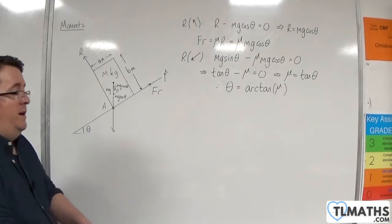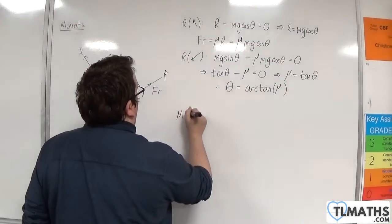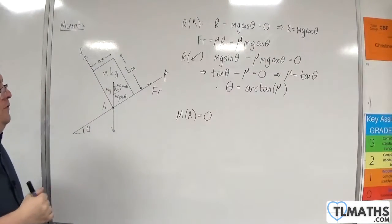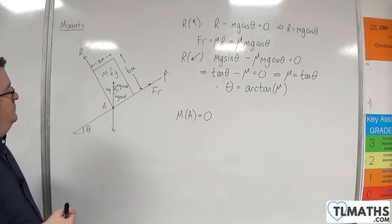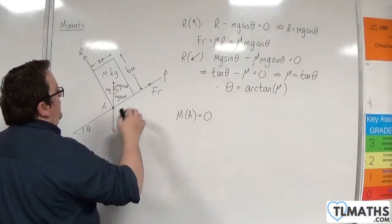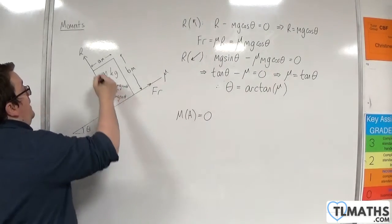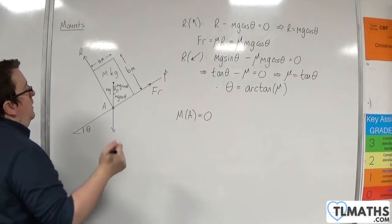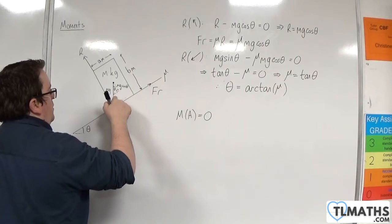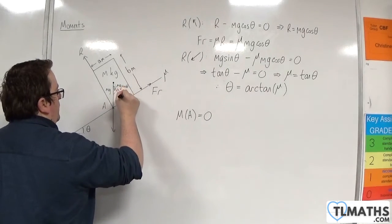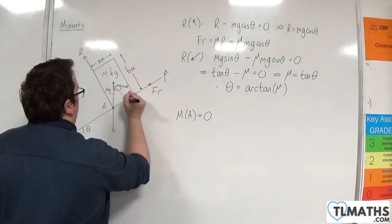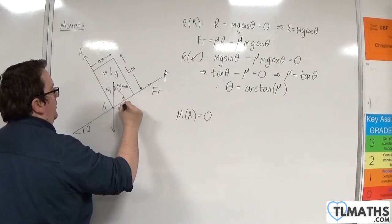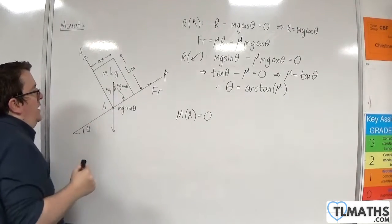So I'm going to take moments about point A. Now if it's on the point of toppling, the total moment here will be zero. And what we need to do is, well, if we look at the friction and the normal reaction force, they both go through A, so we don't need to worry about those. So if I redraw my right-angled triangle so that it is now looking like this.